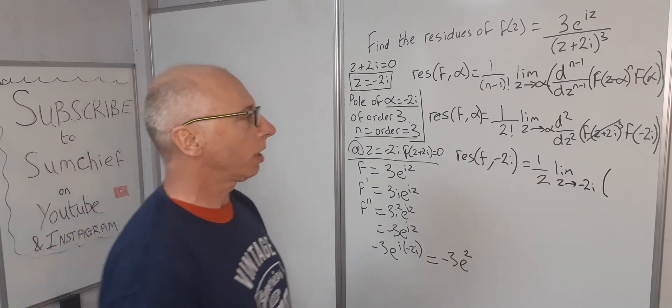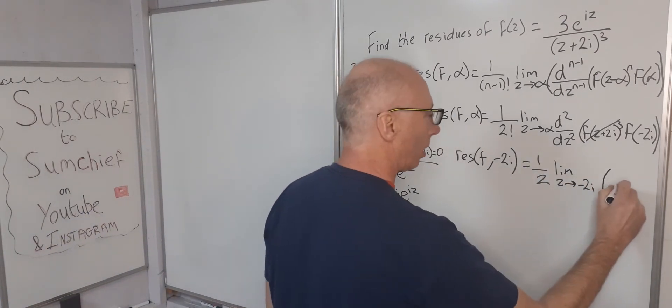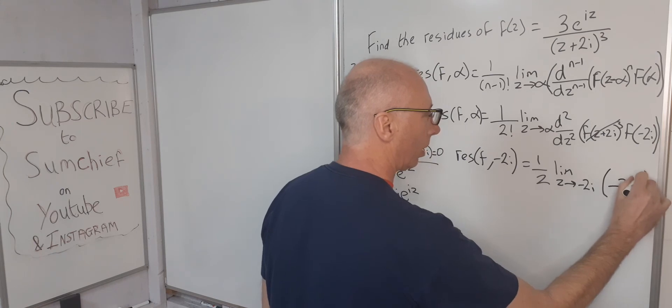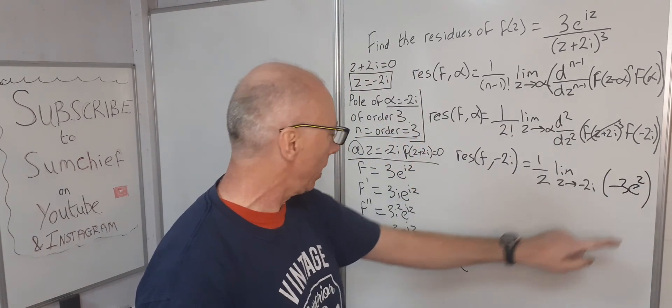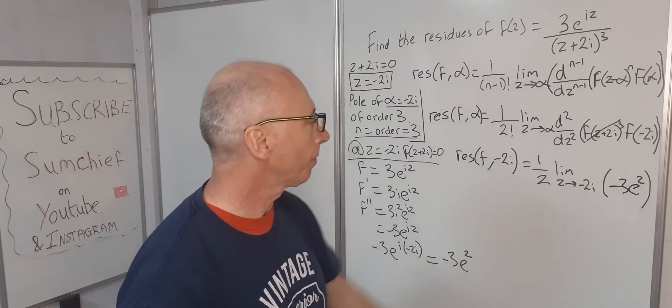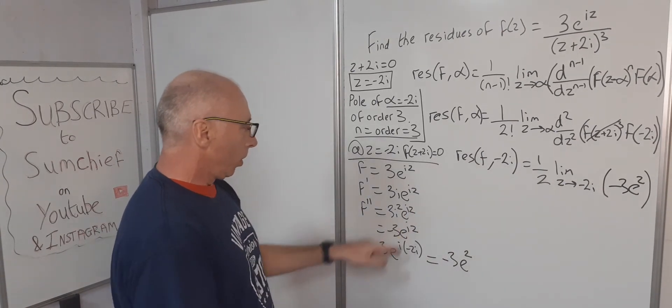Of our function here now. -3e². And at -2i, there's no z left in here. Now we've already plugged that in. So that's -3e². That's what we've worked out here.